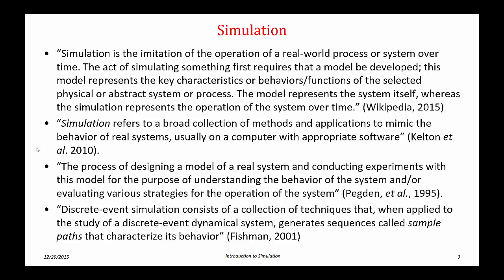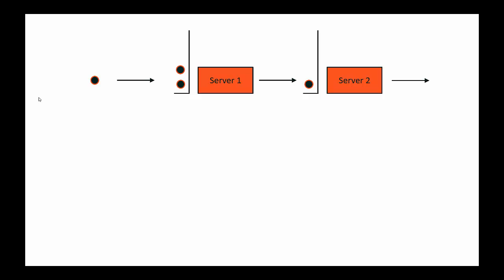Before we go further, let's look at a couple of simulation examples. The first one is a very simple queuing system where we have two servers in series. We have entities, or customers, that arrive and are processed by server one, then they move to server two, are processed, and then they depart. This is a very common configuration. We can think of it as a doctor's office where server one represents the receptionist and server two represents the doctor.